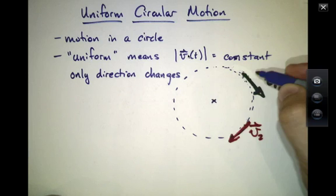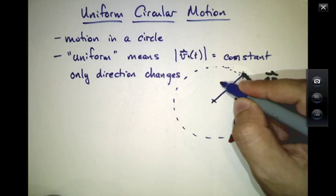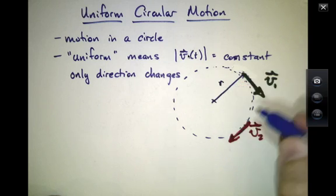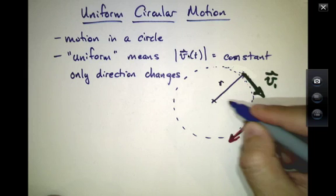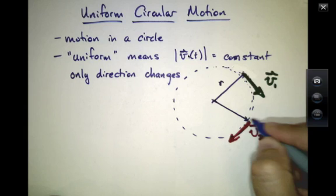So if the object starts out here at time t1, there's a radius. And if it's later at t2, there's another radius vector that I can draw here.